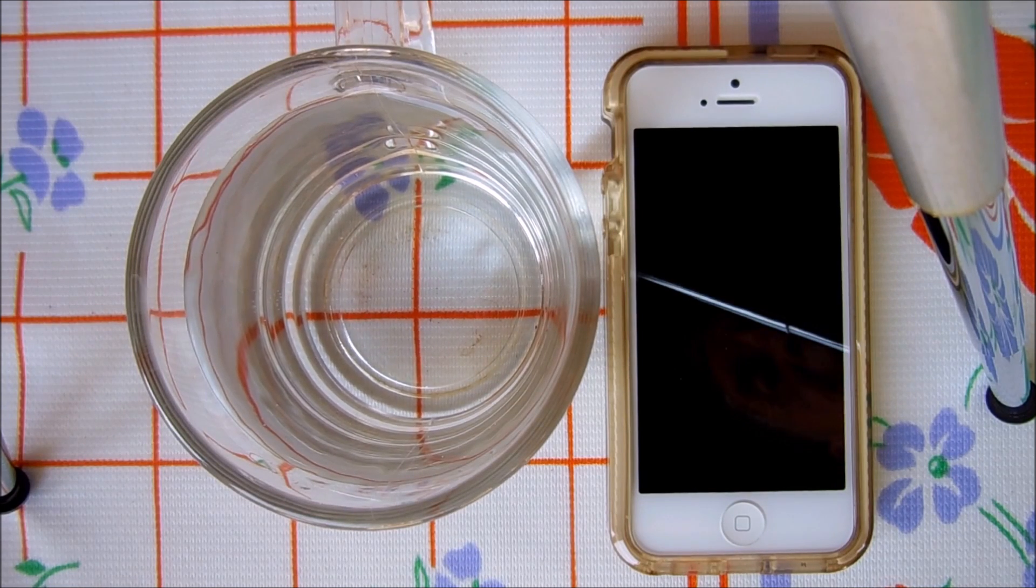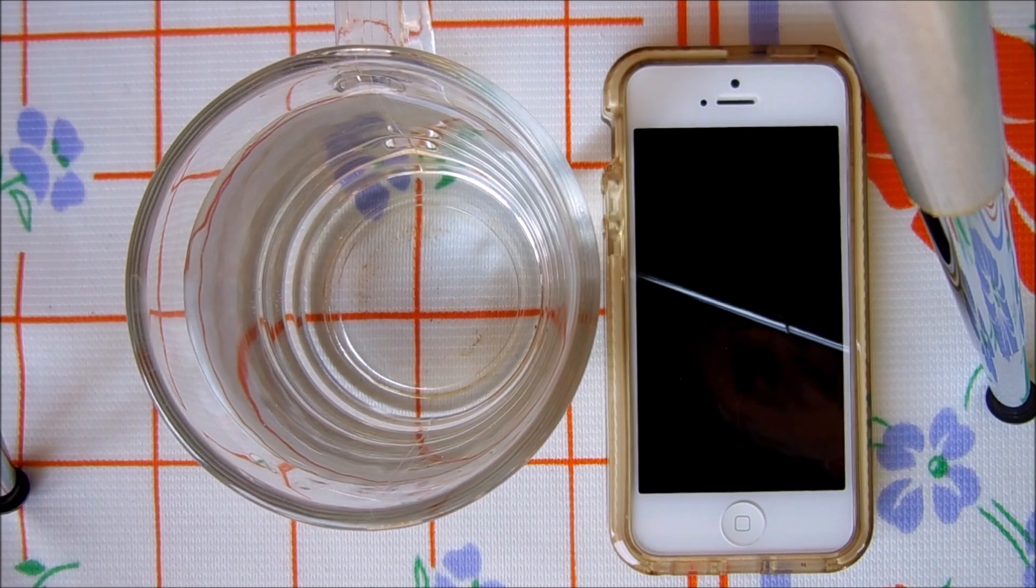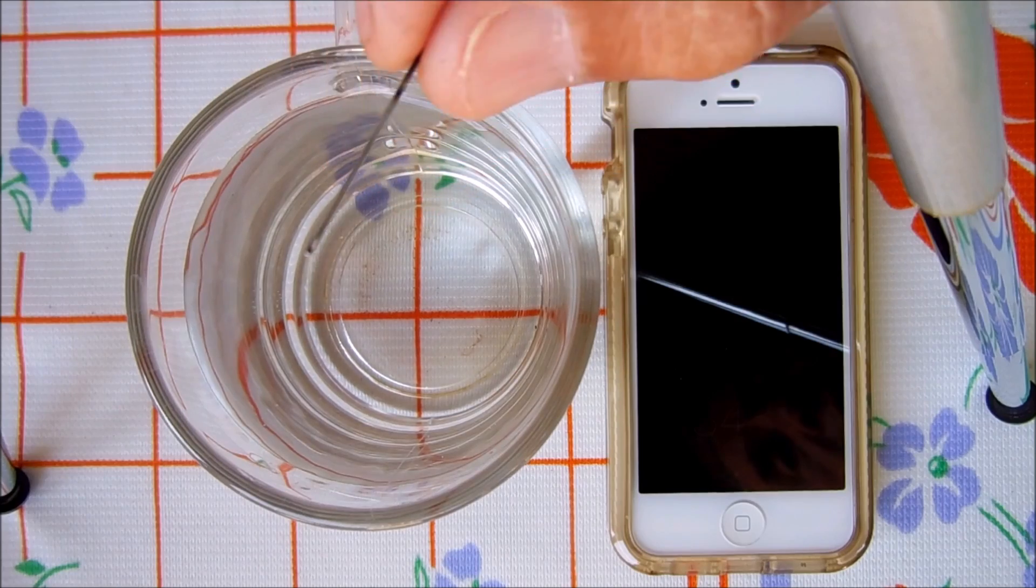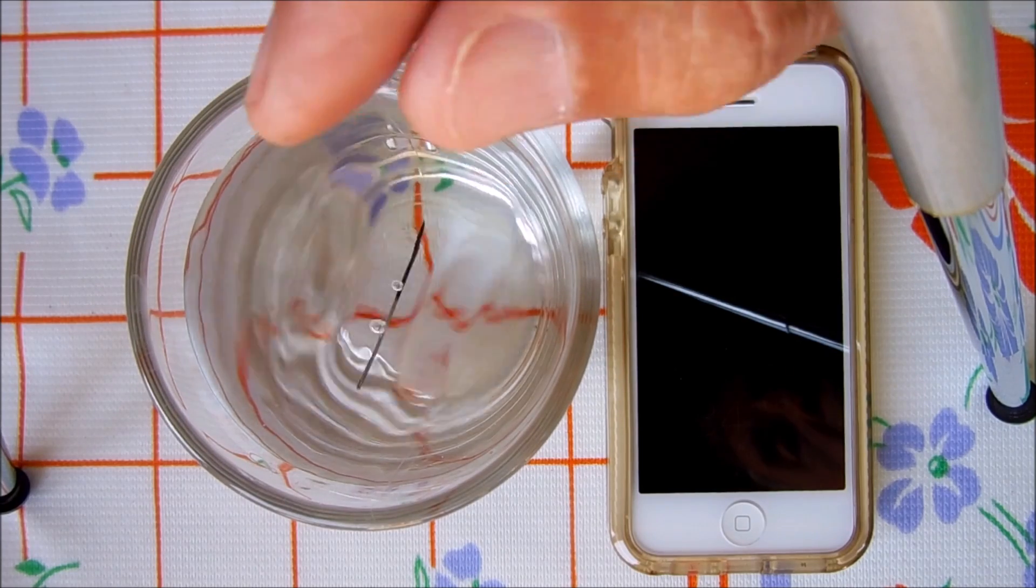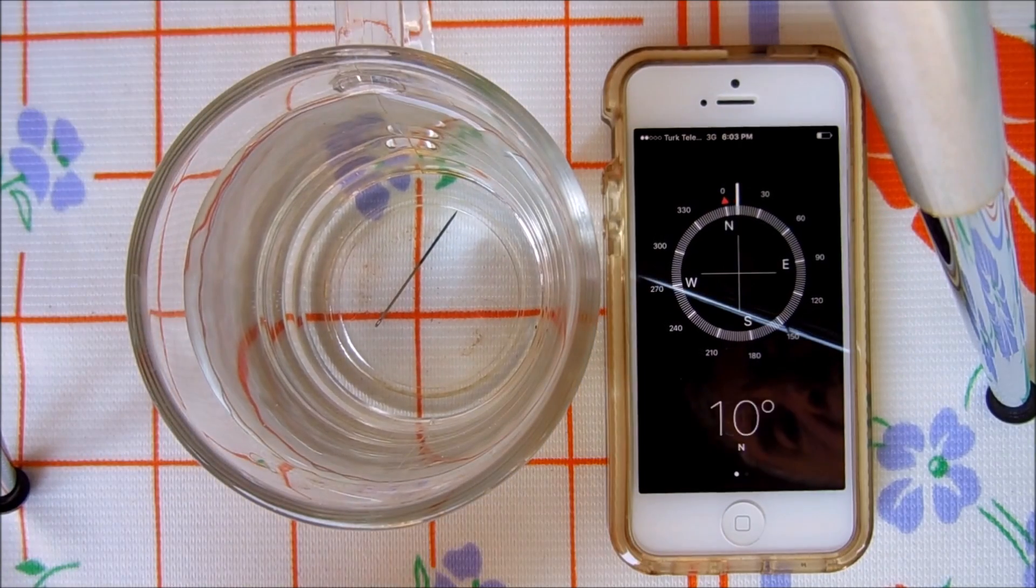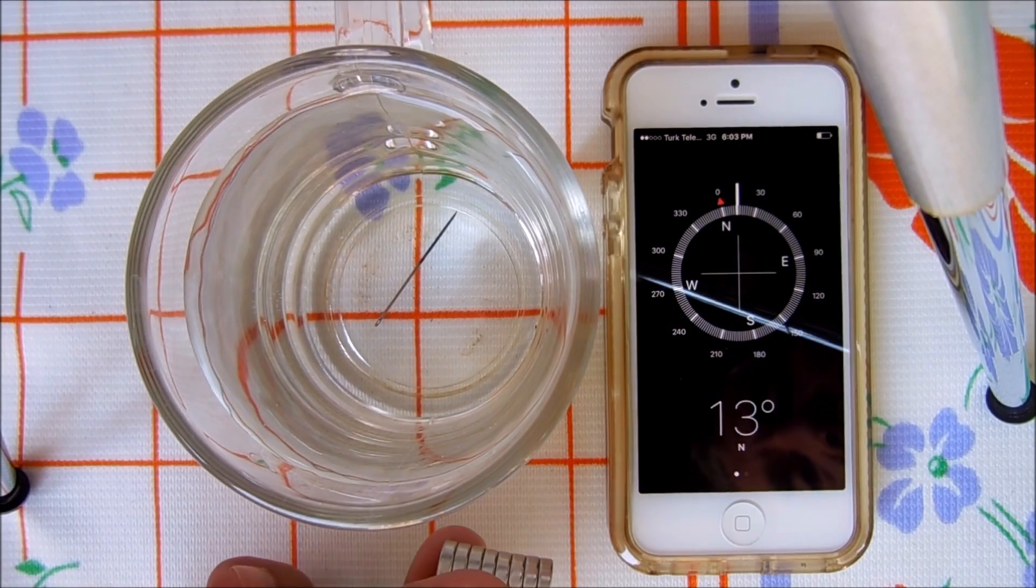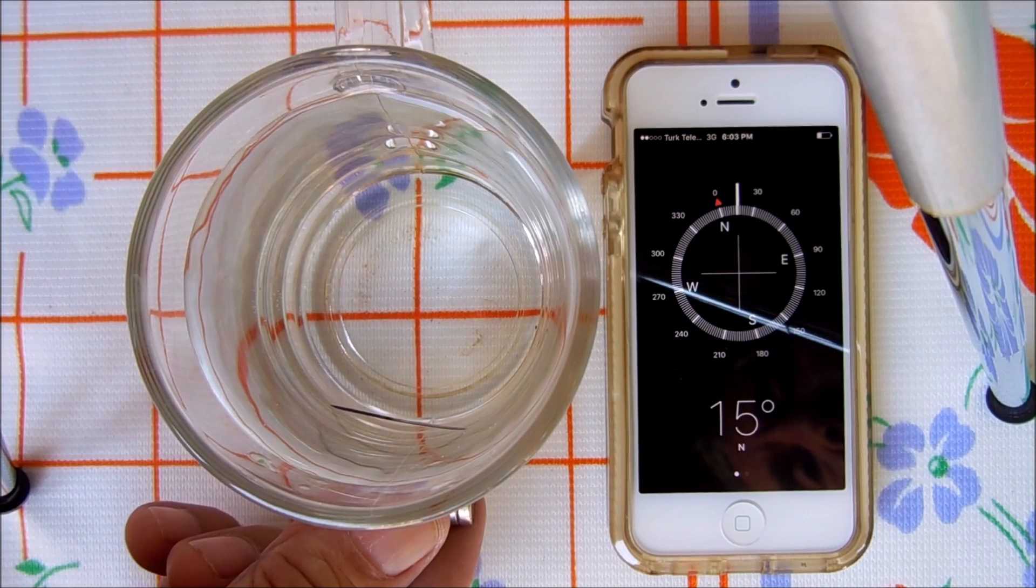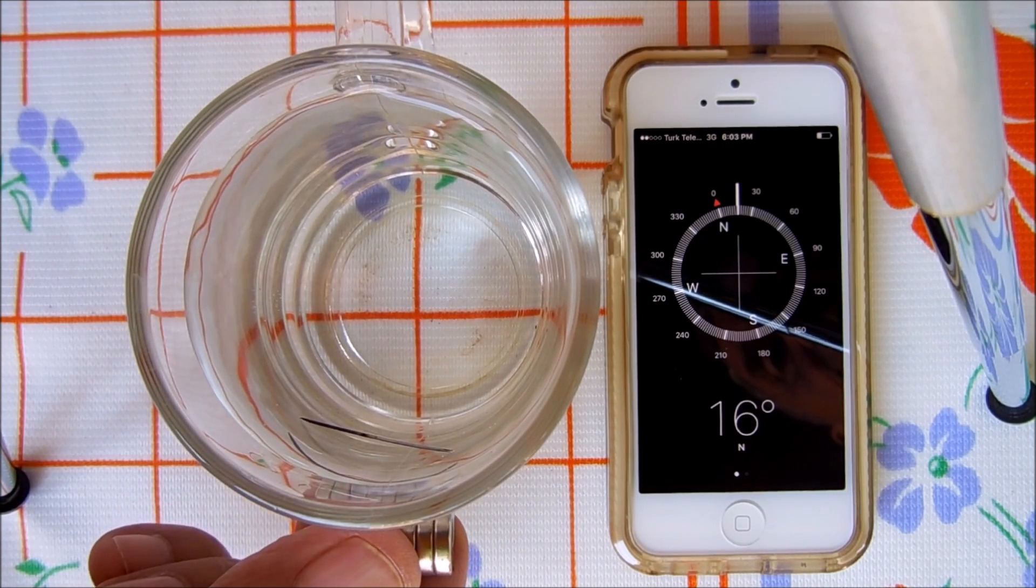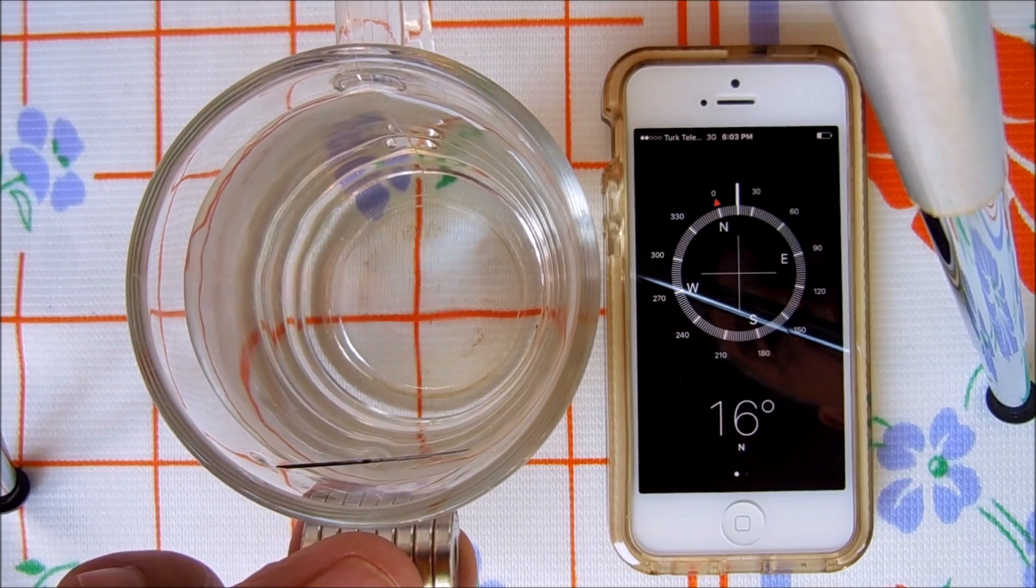Here we are trying to make a compass using water and a needle. We first throw the needle into the water, then by using a magnet we bring it to the surface and surface tension will hold the needle in that position. I hope we will be successful.